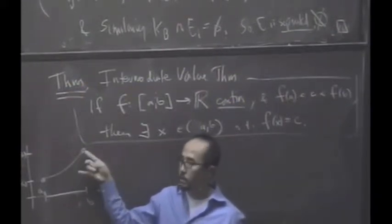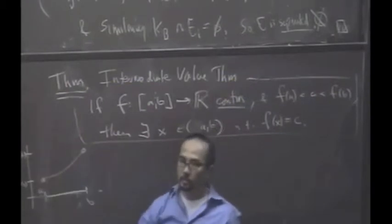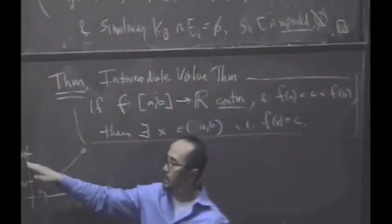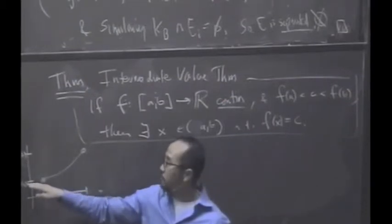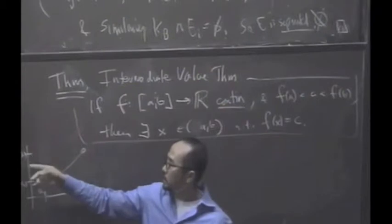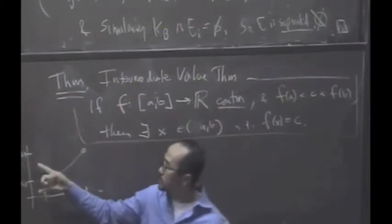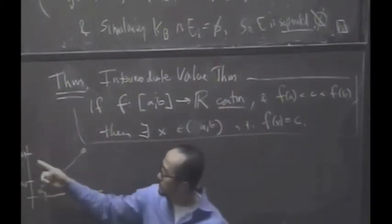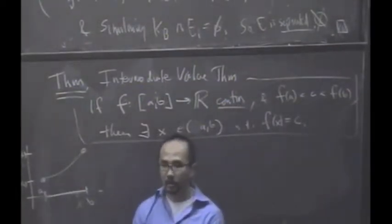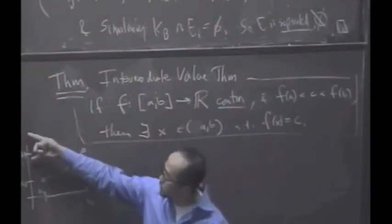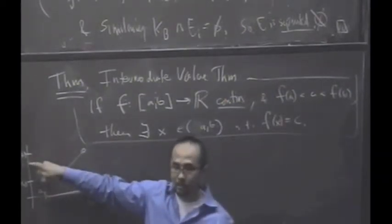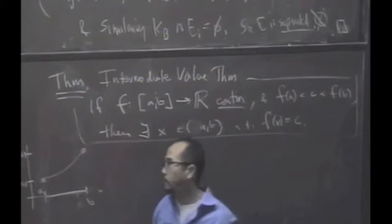Its image is connected. Suppose the image never hits C, but it hits F(A) and F(B). Then the image would be disconnected. In fact, you could disconnect it using the part below C and the part above C. I claim that's a disconnection because the closure of the part above C can at most contain C, can't intersect the other part and vice versa.